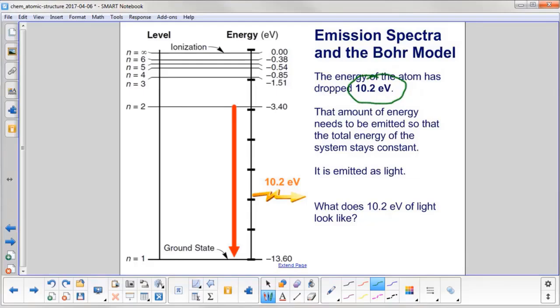So that needs to be emitted so that the total energy of the system stays constant. It will be emitted as light. And here's a symbol for light being emitted at 10.2 eV. What does 10.2 eV of light look like?